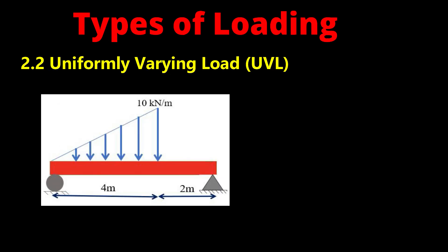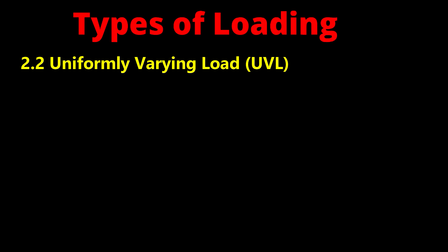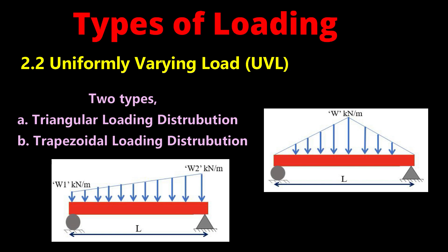The next type of distributed load is non-uniformly distributed load. If the intensity of load increases linearly along the length, it is called uniformly varying load or UVL. UVL is further classified into two types: triangular loading distribution and trapezoidal loading distribution.